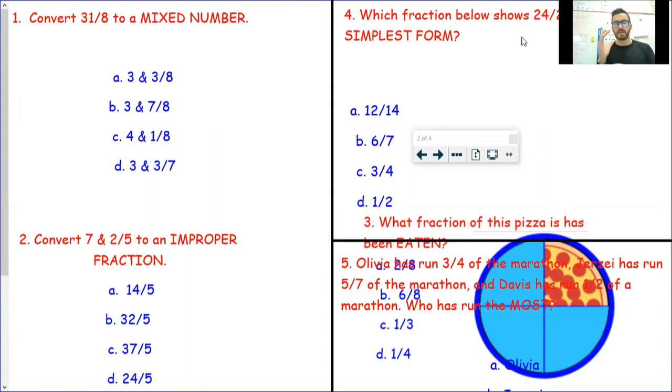Getting right into it, I'm going to do number one and number two at the same time. With number one, converting 31 eighths to a mixed number, you know how we like to write it. That fraction bar means divided by. If I want to change that to a mixed number, essentially what I'm doing is 31 divided by 8. How many whole times can eight go into 31?